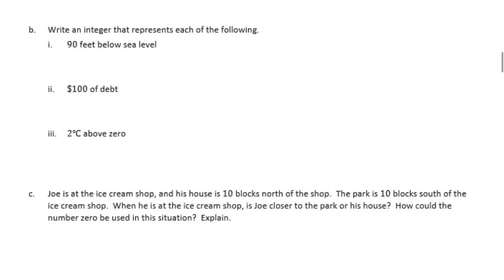Then write an integer that represents each of the following. 90 feet below sea level: since we're below, this is going to be negative 90. $100 of debt: that means you owe it, so you have negative $100. And 2 degrees Celsius above 0: above is positive, so this would just be 2.